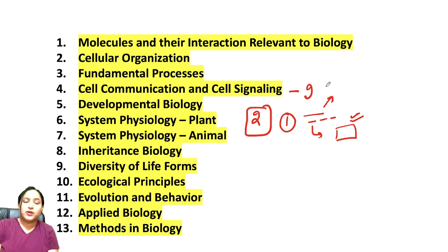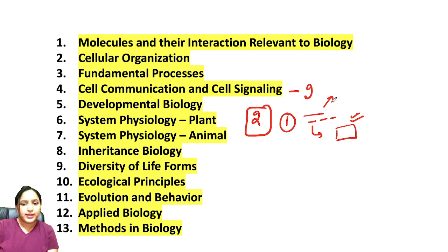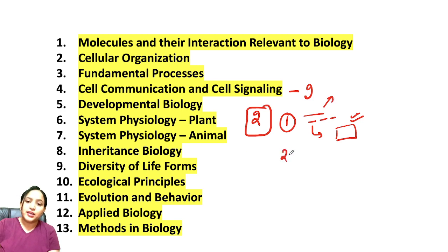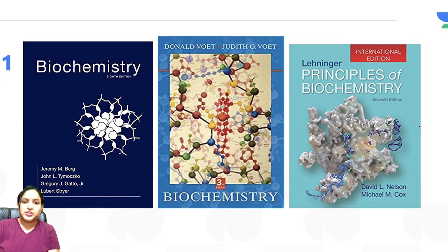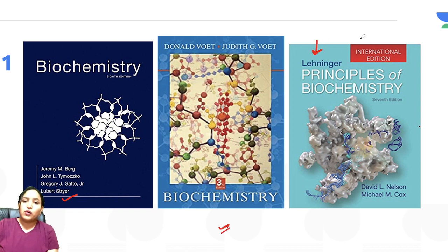This approach is not for someone who has only one or two months before the exam. If you are in your bachelor's, you should read this way — it is a very authentic and elaborative manner where you will grasp both concepts and factual information. Secondly, you can take notes from any coaching institute or book providing notes. Now let's talk about Unit 1, biochemistry. The first book is Stryer — a very good book. Then there is Voet, and the well-known Lehninger.